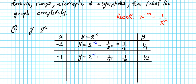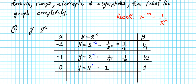Now let's take a look at 0. What's the output? You have 2 raised to the 0th power. If you raise 2 to the 0th power your output is simply going to be 1. Now let's switch to the positive x input values. If x is 1, what is our output going to be? It's going to be 2 to the first power, and that is simply 2. So y is going to be 2 when x is 1.